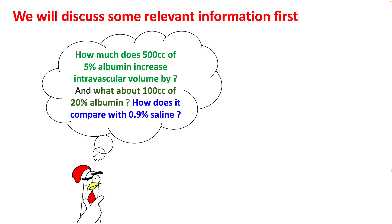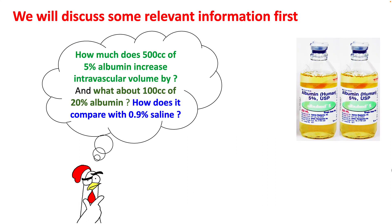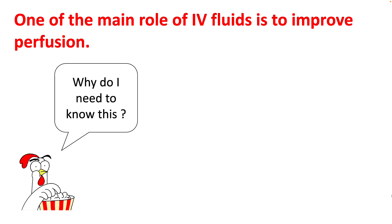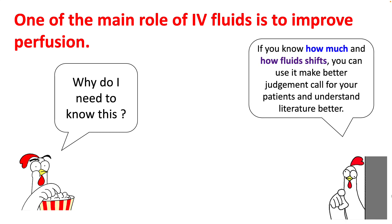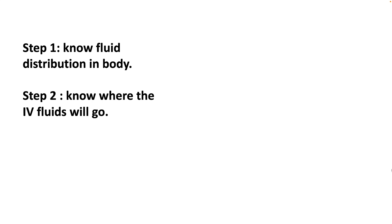So how much does 500 cc of 5% albumin increase your intravascular volume? And what about 20% albumin, and how do these compare to normal saline? The reason you need to know how much IV fluid improves your intravascular volume is because you use these to improve perfusion, and you need to know how much intravascular volume increases when you use a given IV fluid. Knowing how fluid shifts occur will help you make better adjustment calls for your patient and understand the literature better.